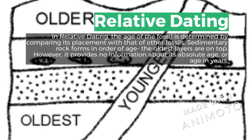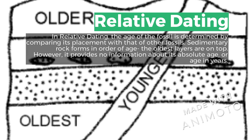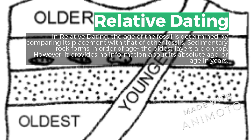Relative dating: in relative dating, the age of a fossil is determined by comparing its placement to that of other fossils. Sedimentary rock forms in order of age — the oldest layers are on the bottom and more recent layers are on top. However, it provides no information about the absolute age, or age in years.